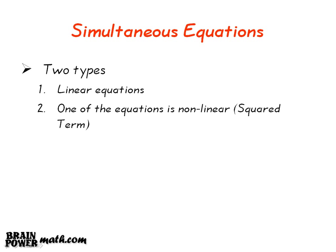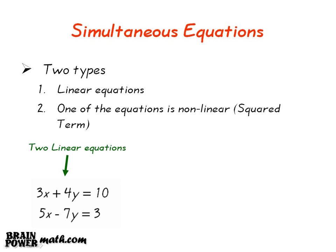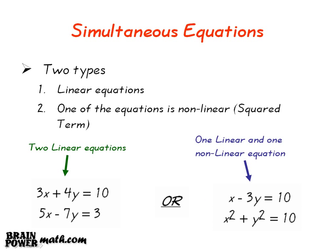An example of simultaneous equations with two linear equations is: 3x plus 4y is equal to 10, and 5x minus 7y is equal to 3. An example with one linear and one non-linear equation is: x minus 3y is equal to 10, and x squared plus y squared is equal to 10.